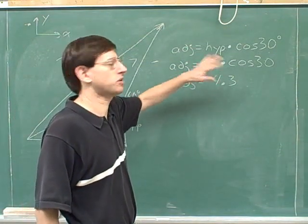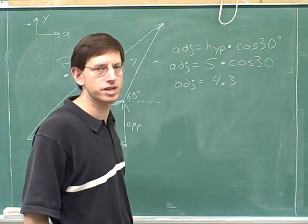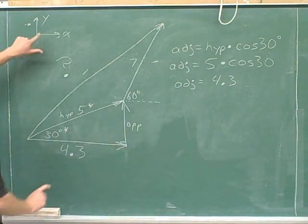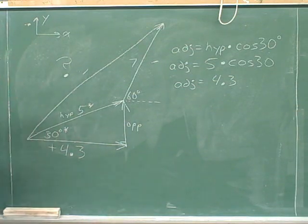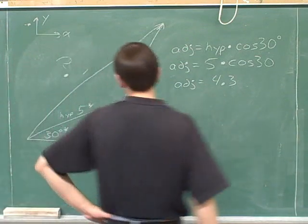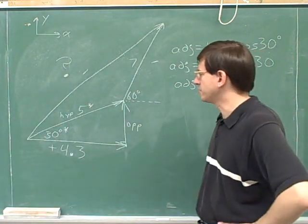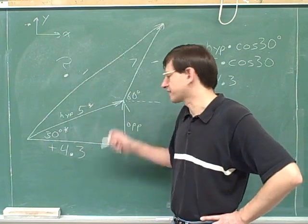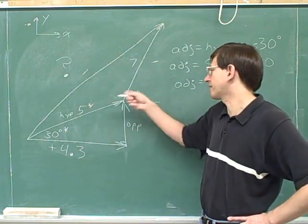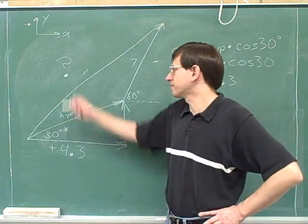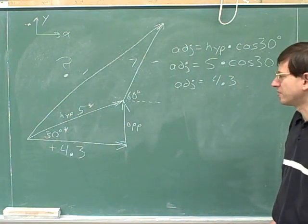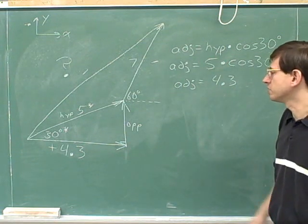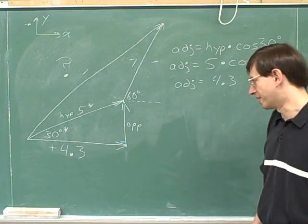The trig functions only give us the magnitude. We have to determine the sign on our own. Since this vector component points to the right, and right is our positive direction, the x-component is positive 4.3. On this problem I've chosen not to invent new variables for each vector and its components, but if you wanted to invent variables for the first vector's x and y components, the second vector's components, and the overall displacement's components, that would be perfectly fine.